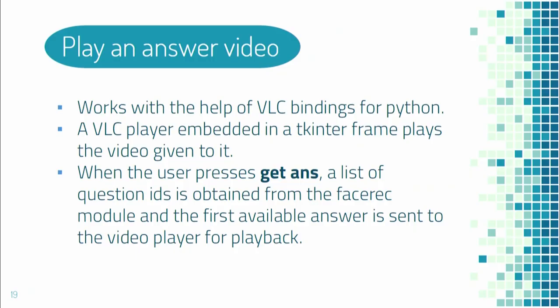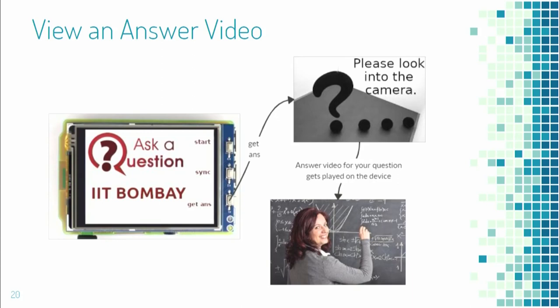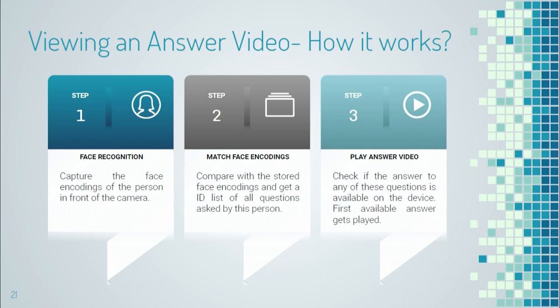The next module is used to play answer videos on the device, using VLC bindings for Python. When a user presses the Get Answer button, face recognition is performed and the user is found in the database to know which questions they have asked. The device checks if an answer is available for any of those questions, and the first available answer gets played. The face encodings are matched with available encodings, a list of questions is generated, and the first available answer plays.